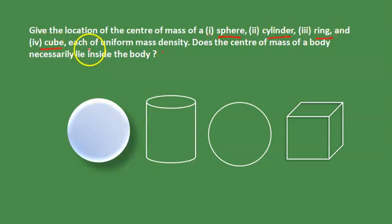So, to give the location of the center of mass of a body - even if the body has uniform mass density - we have geometrical shaped bodies.